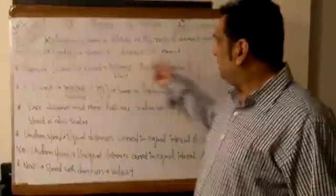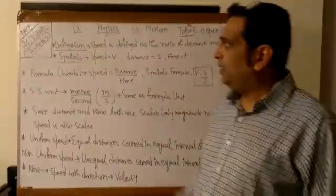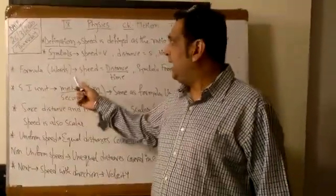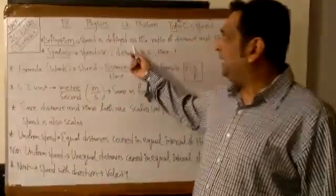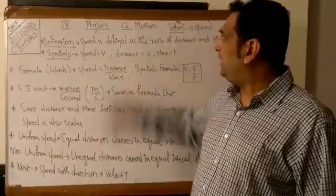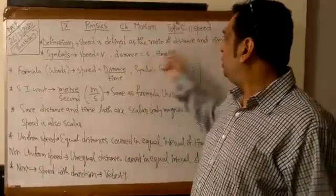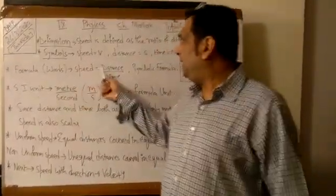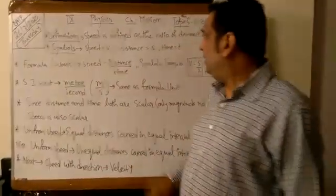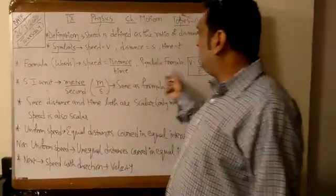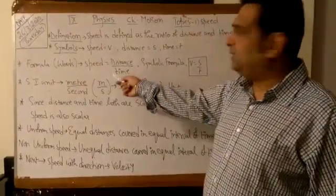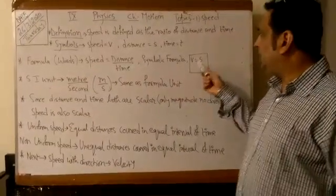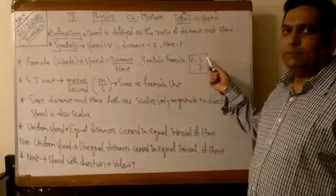You can see it is written over here. Now the formula — from the definition, the ratio of distance and time, speed is equal to distance upon time. Putting all the symbols, we get V is equal to S upon T.